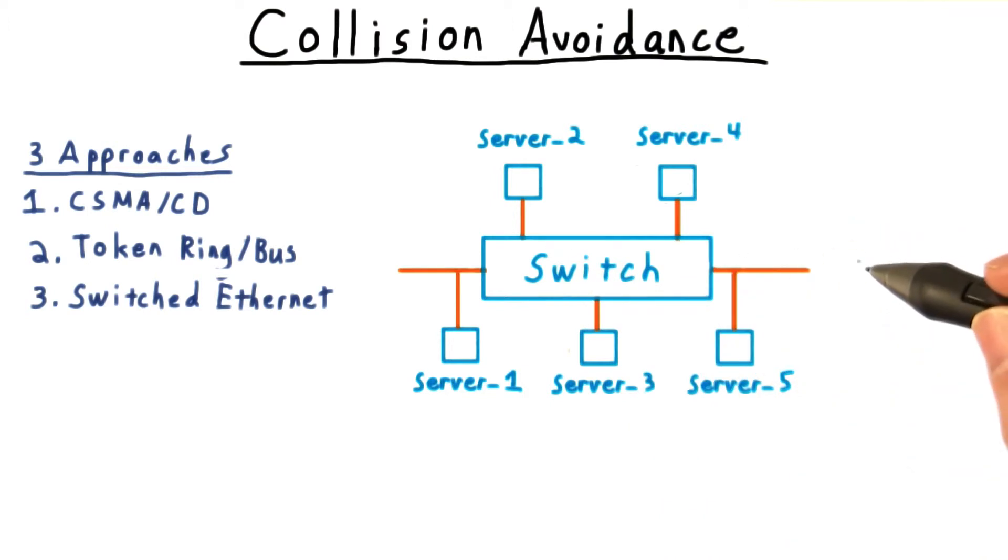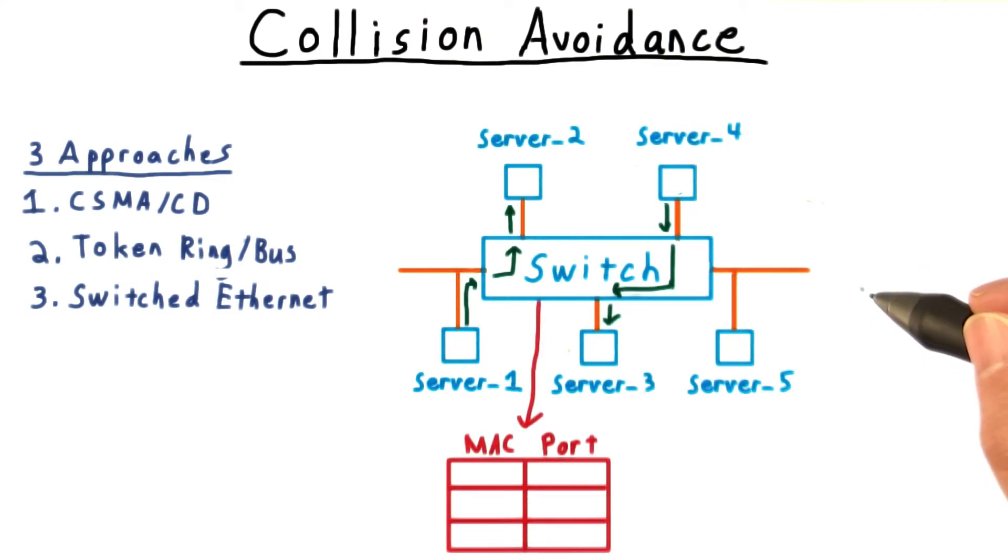A switch is physically connected to the nodes like a hub, but instead of broadcasting every frame that comes in like a hub, it looks at the destination MAC address and routes the frames accordingly. The advantage is now that we have fewer collisions. For instance, two pairs of nodes can communicate simultaneously, whereas this would have been impossible before.